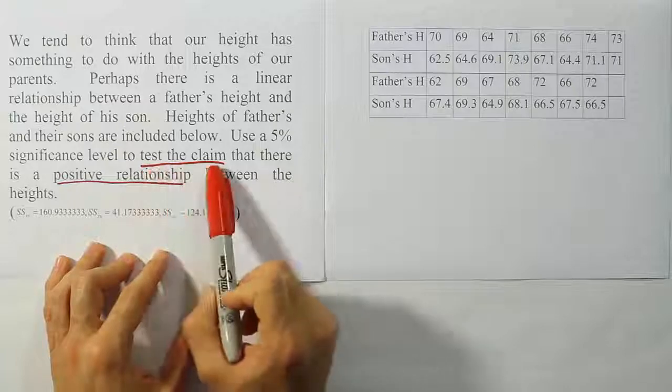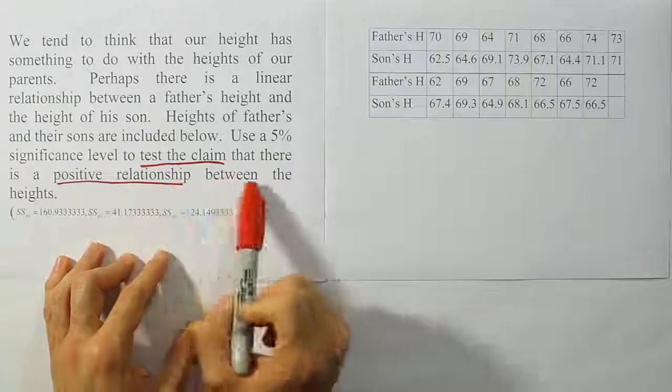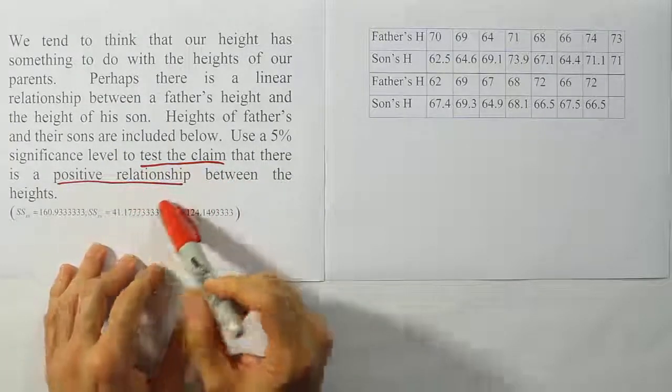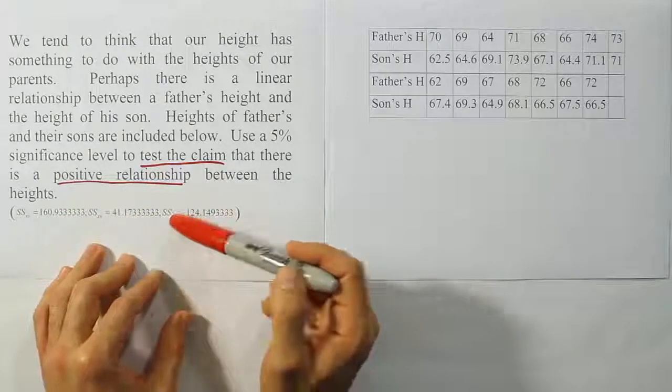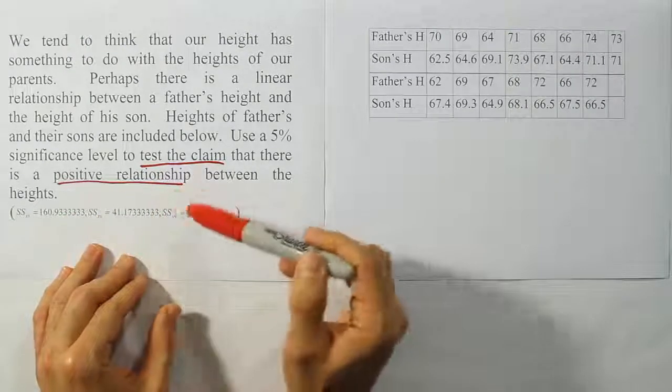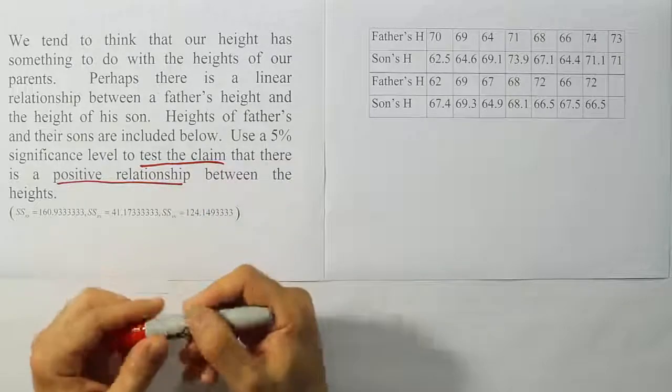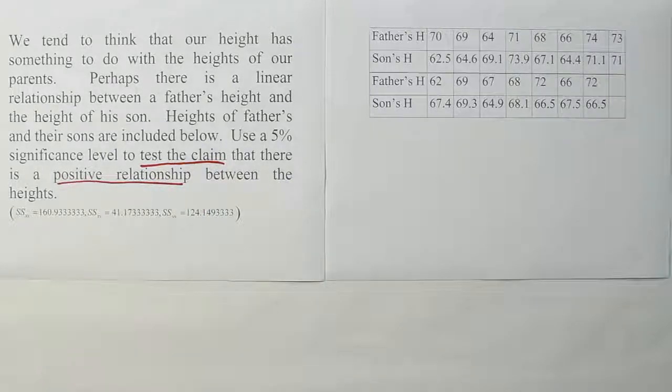Then they ask us to test the claim that there is a positive relationship between the heights of fathers and sons. And then give us some summary data, which is really helpful. They give us all the sum of square values. So we have the sum of square for xx, xy, and yy in the problem. Alright, so let's do our first step of hypothesis testing, which is to express the claim in symbols.